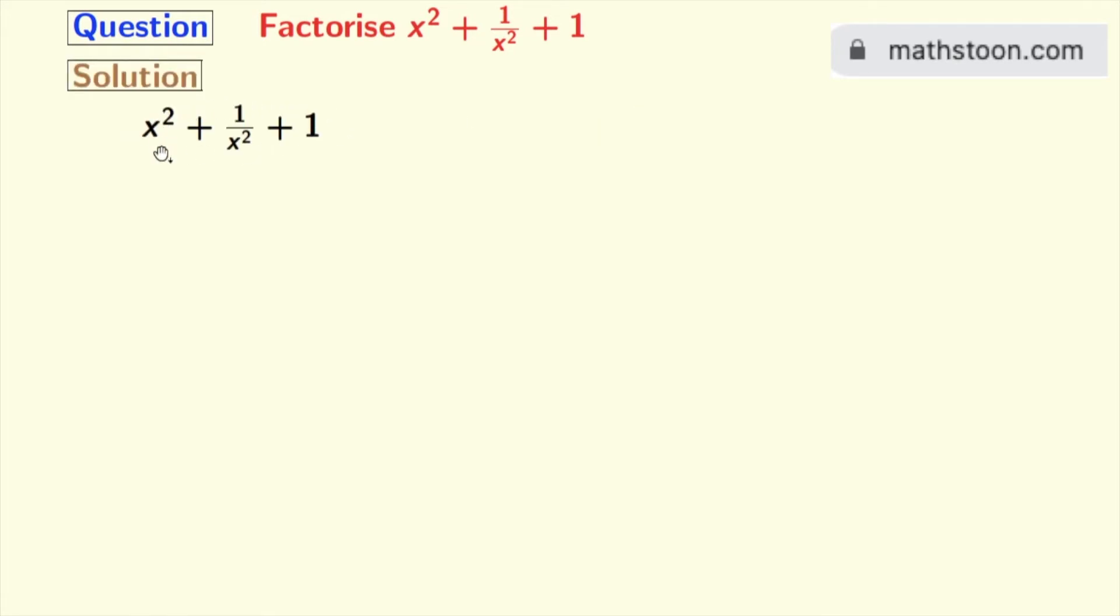This is our given algebraic expression. Now at the first step, we will write 1 as 2 minus 1. So we have x square plus 1 by x square plus 2 minus 1.